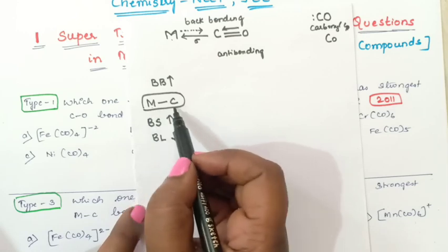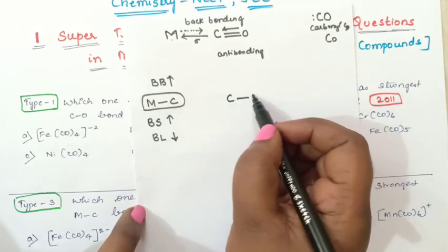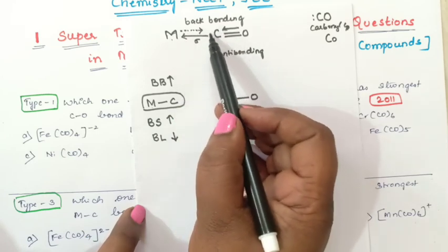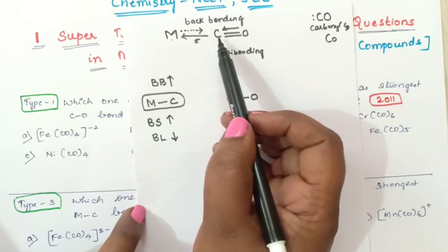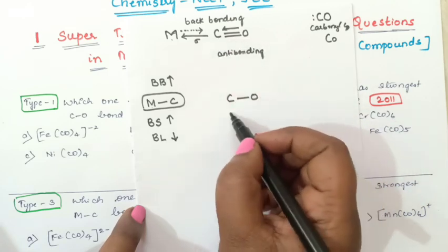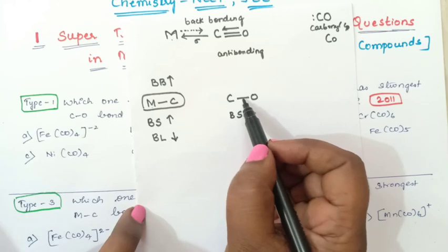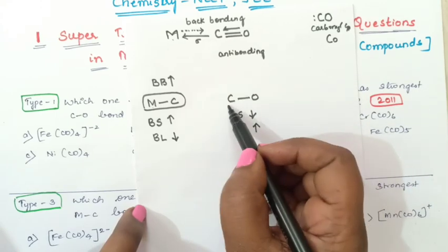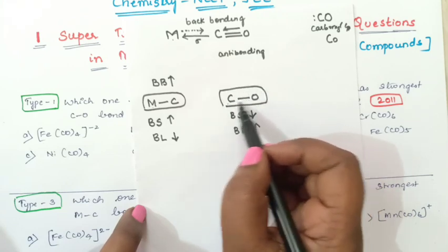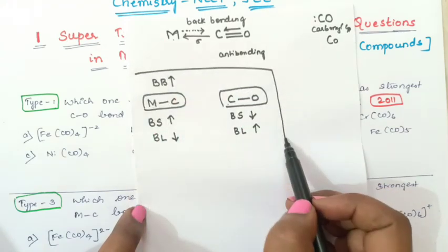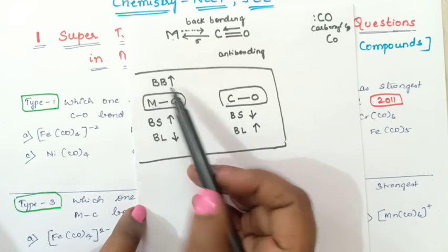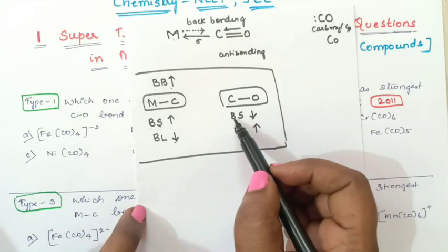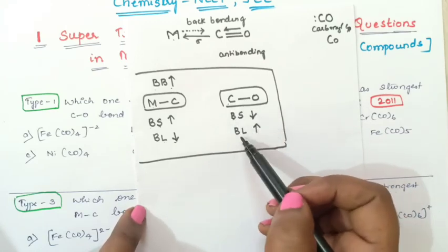Now what happens to the bond between carbon and oxygen? When backbonding increases, it donates electron density to the carbon, and stability will decrease. When stability decreases, bond strength is going to decrease. Since bond strength and bond length are inversely proportional, bond length of CO is going to increase. So when backbonding increases, CO bond strength decreases and CO bond length increases.